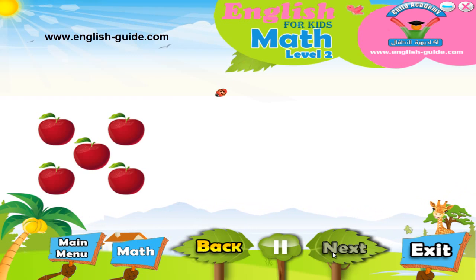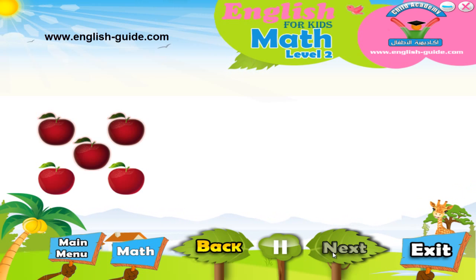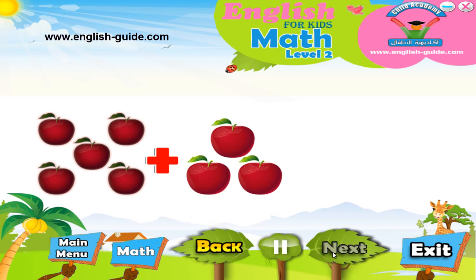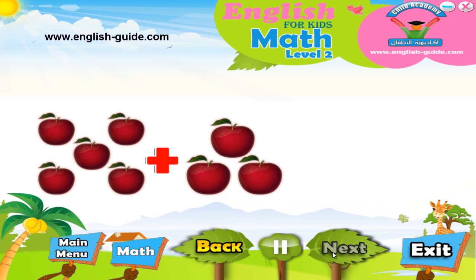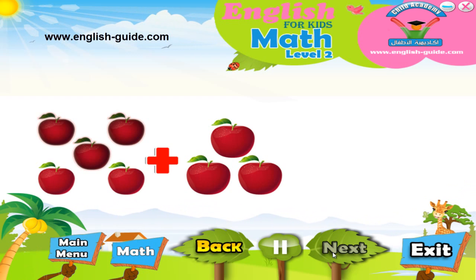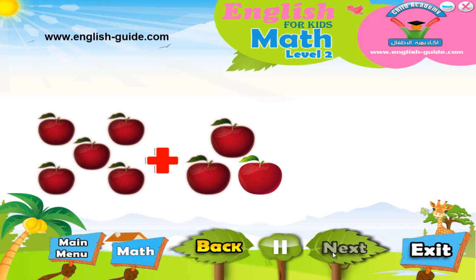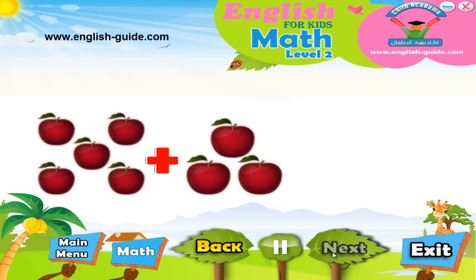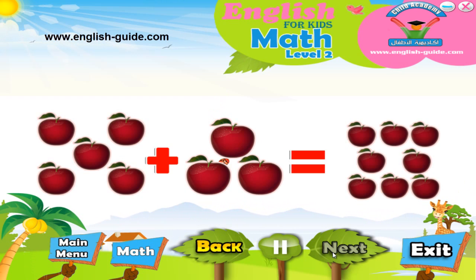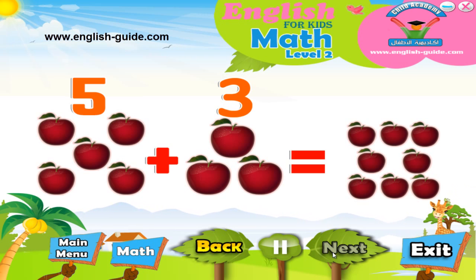How many apples can we see now? Let's count them. One, two, three, four, five! Now, if we add one, two, three apples to the five apples, how many apples do we have? One, two, three, four, five, six, seven, eight! So, five apples plus three apples equals eight apples, which means that five plus three equals eight.